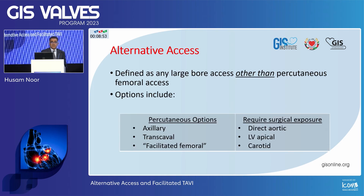When we talk about alternative access, it's an access other than femoral. These options include either percutaneous or surgical. The percutaneous options are axillary, transcaval, or facilitated femoral. Other options that require surgical expertise include direct aortic, LV apical access, or transcarotid access.